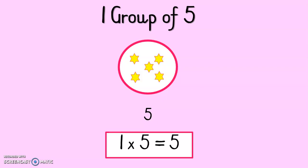So what would my times table sum be? It will be 1 group times 5 stars equals 5. So 1 times 5 equals 5.